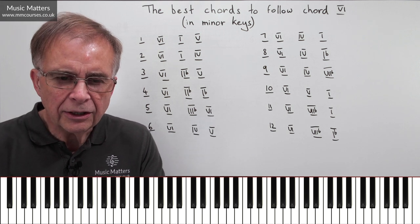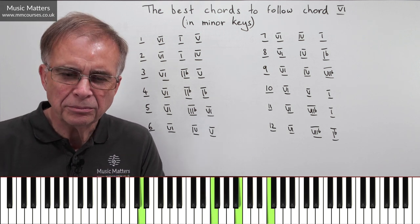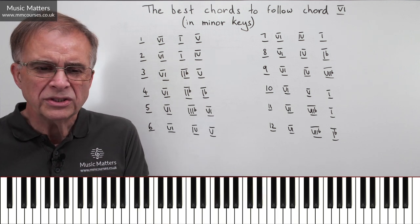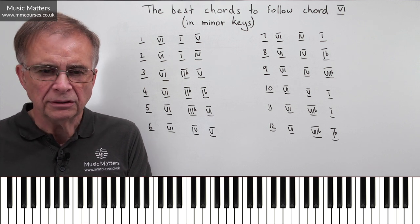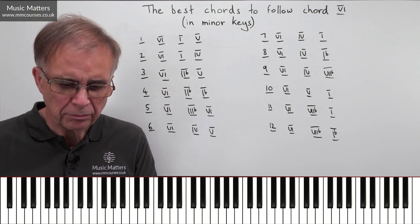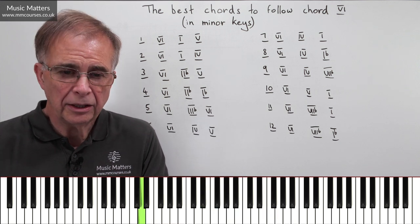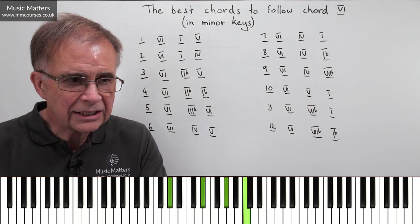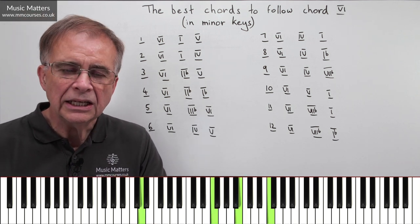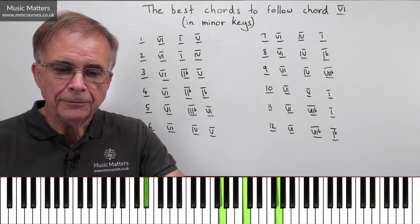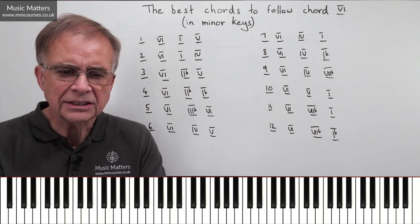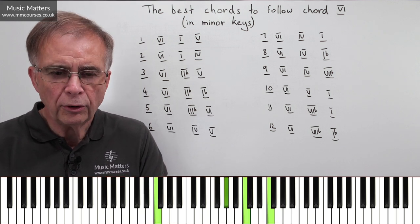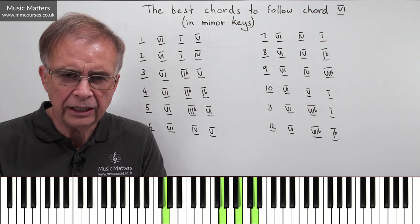Option XI is to go from VI to VIIb to I. So if you're wanting something that's not going VI, V, I, well actually, what about VIIb as a replacement for your V? It's another possibility. Or option XII, to go from VI to VIIb to Ib. Gives you a kind of ongoing possibility, doesn't it? So VI, VIIb, Ib, then possibly IV, V, I.